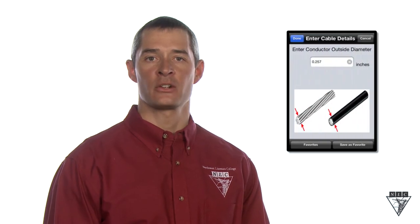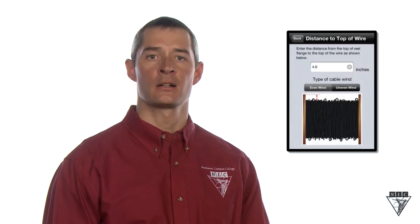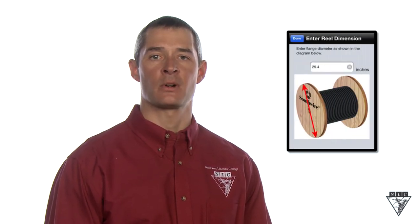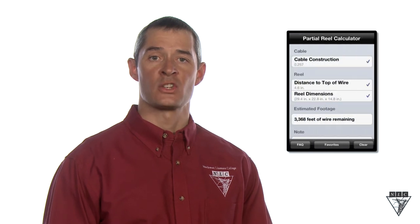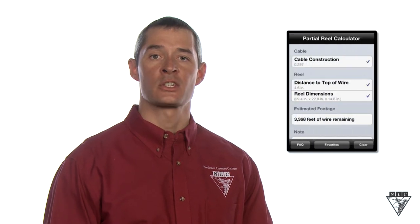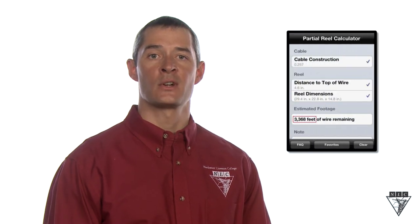When you launch this app, it will first prompt you to enter the diameter of the wire you're using, the distance from the top of the reel to the wire, and the reel's dimensions. Each step is accompanied with a detailed graphic to simplify the process. Once the information is entered, it will display the estimated footage remaining on the reel.